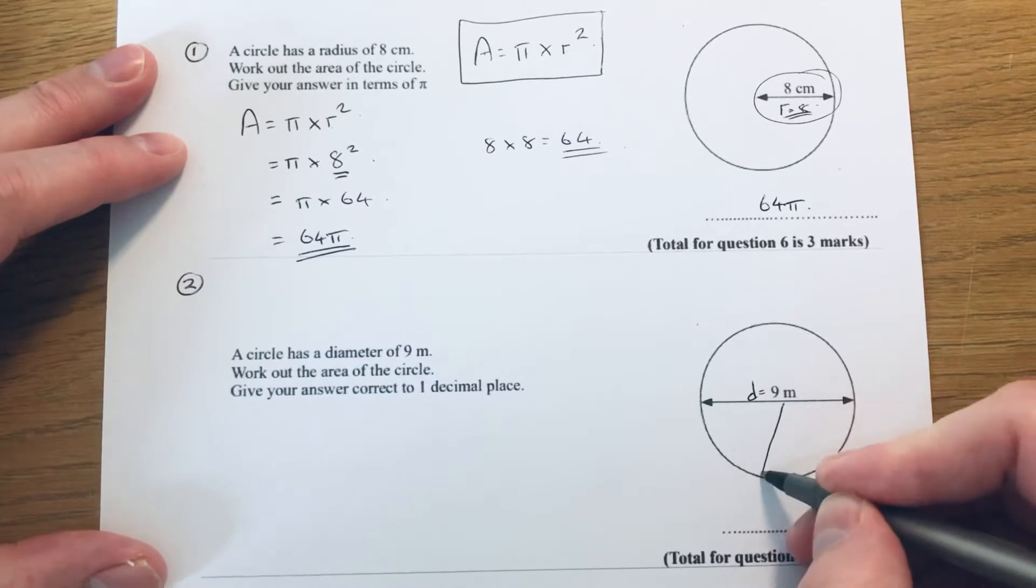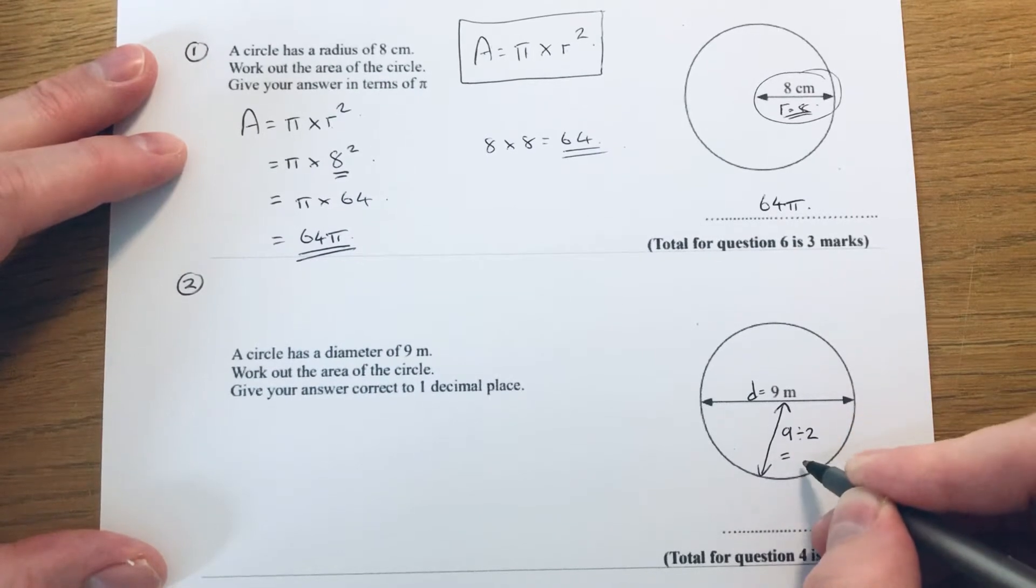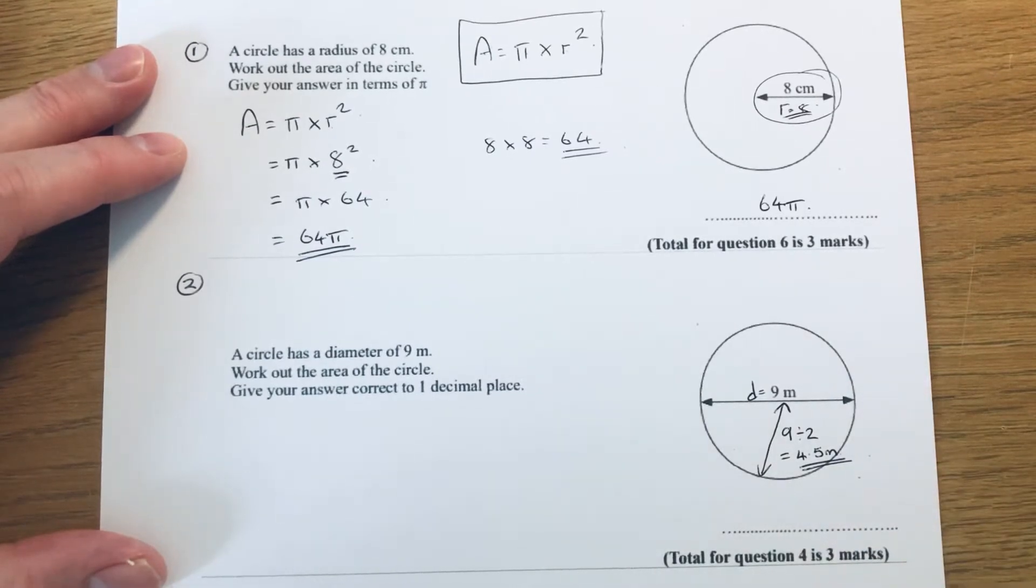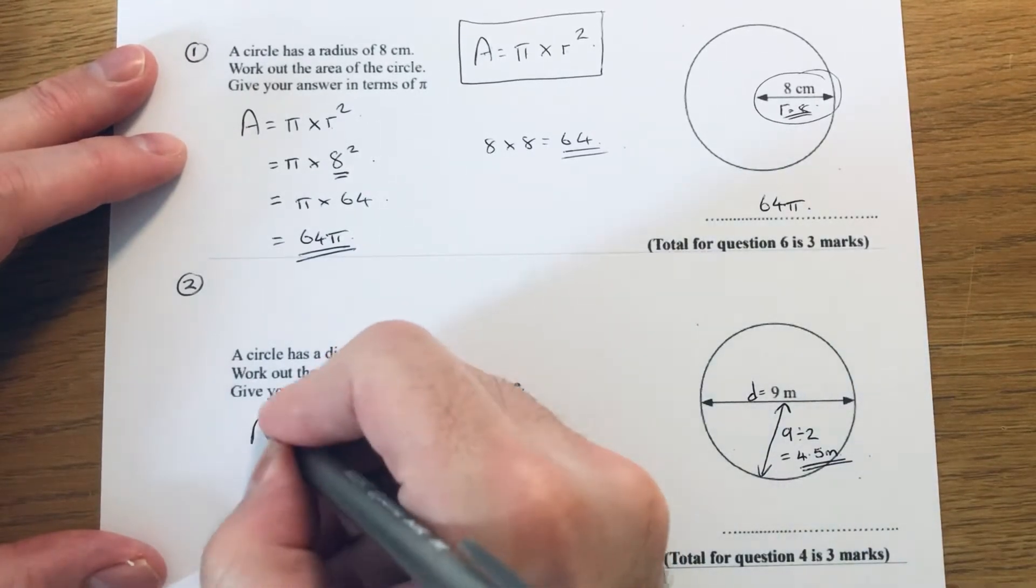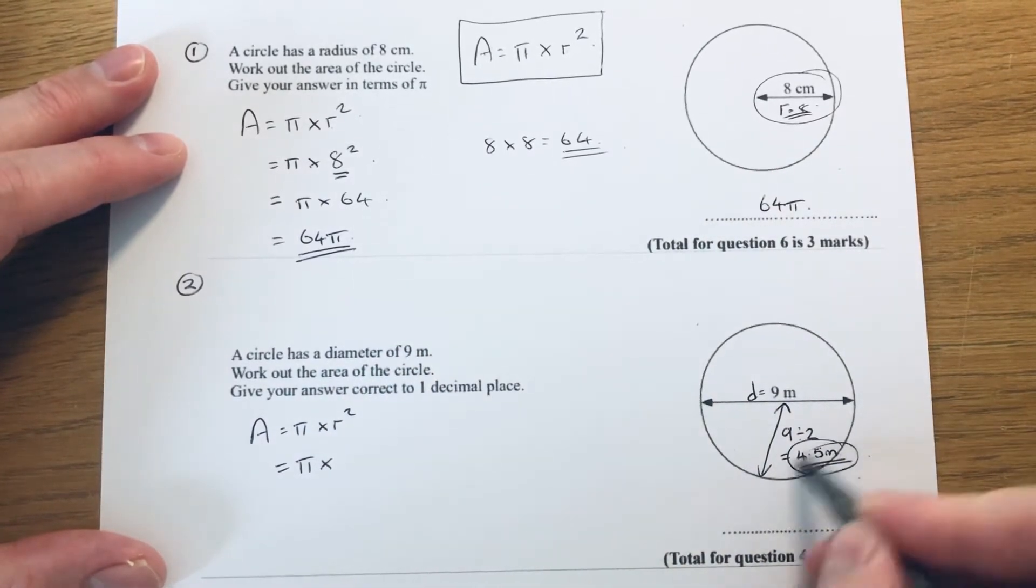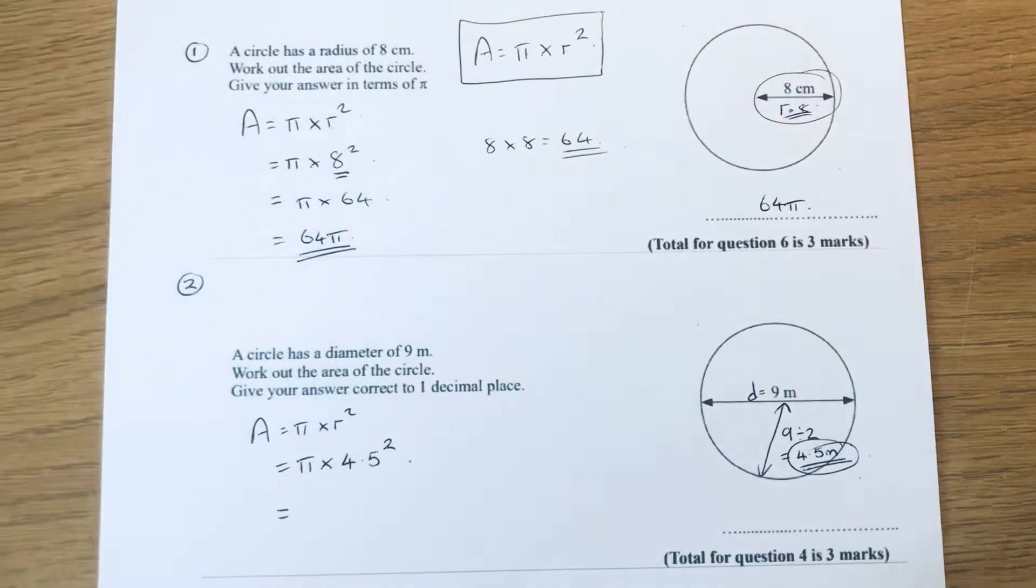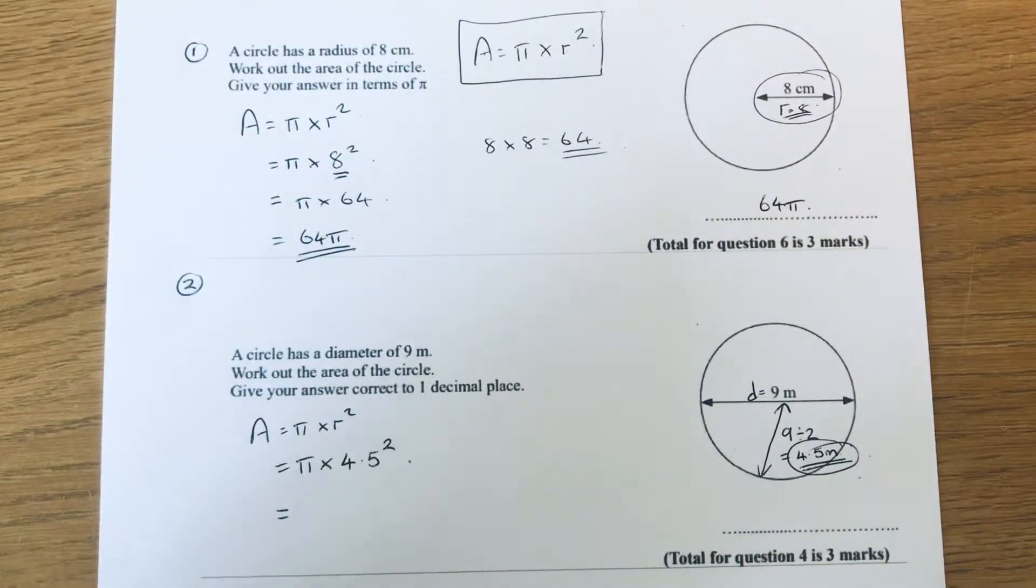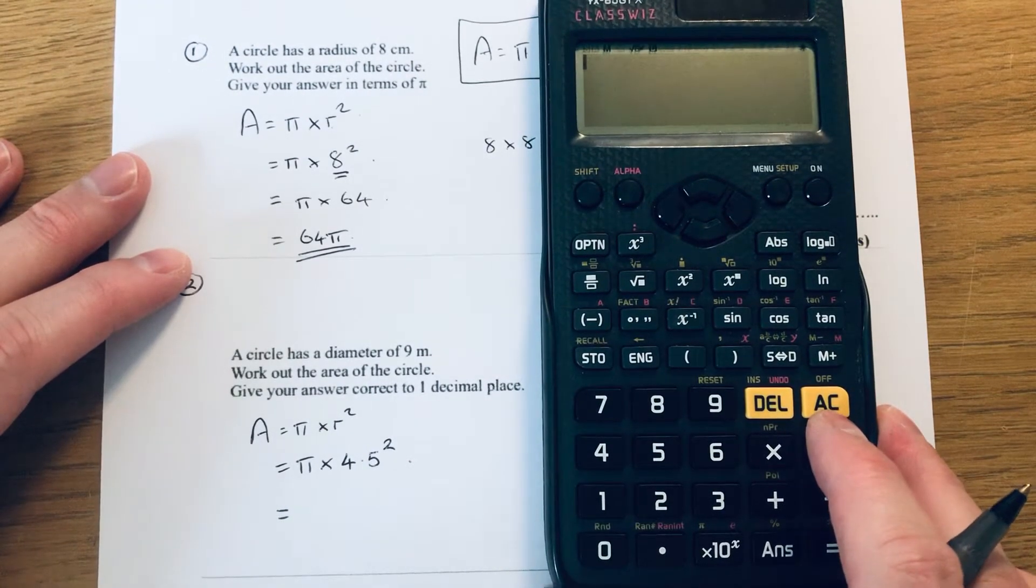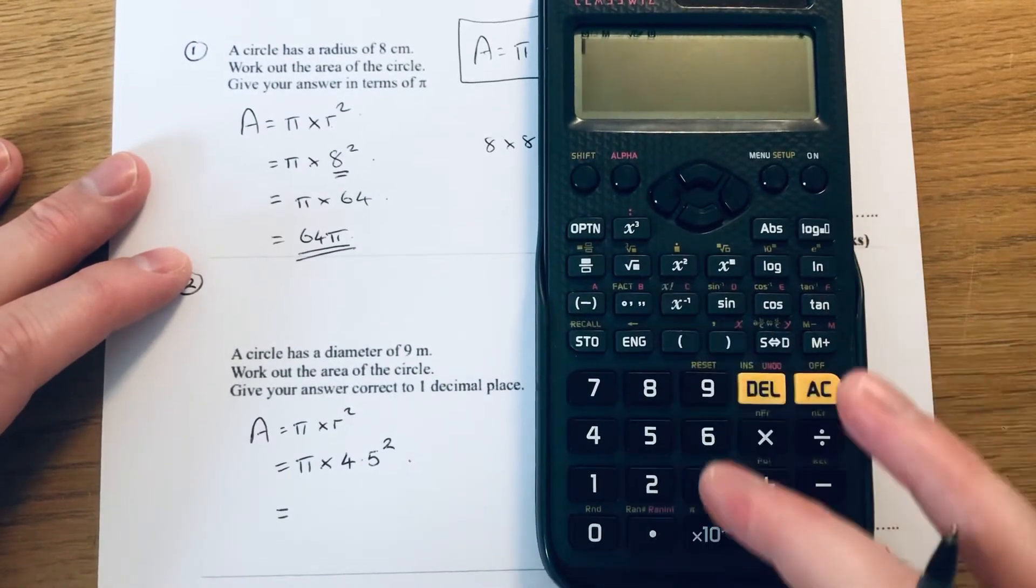This time you're given the diameter, that's the distance all the way across. Remember you need to put the radius into the formula, so we need to half the 9. So 9 divided by 2 is 4.5. This is the number you substitute into the formula. If you write our formula down, it's going to be pi times 4.5. This is looking like a calculator question, so you're best off just typing that in on the calculator. There's no need to work out 4.5 squared, just let the calculator do the work. So we go shift pi times 4.5 x squared, press equals.